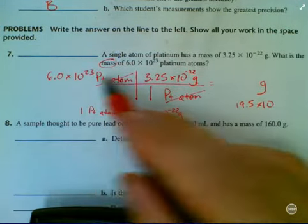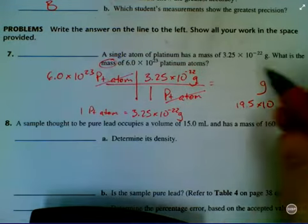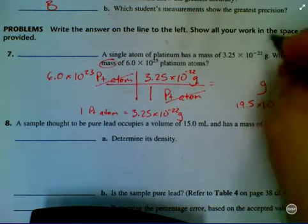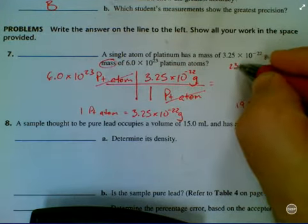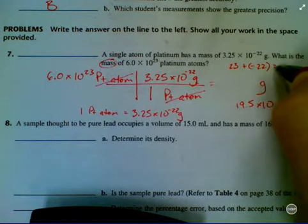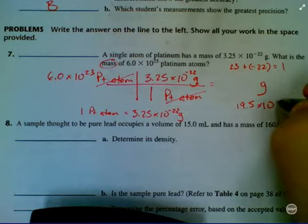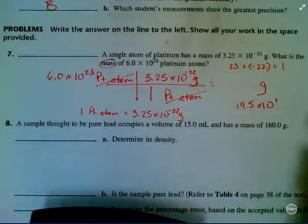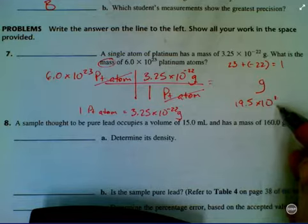So 19.5 is what the calculator told me. But I also have some scientific notation issues to deal with. I'm multiplying these two numbers that have exponents in them. So my rule is I'm going to add these exponents together. So I have exponent of 23 plus negative 22. That equals 1. So I bring that down here. So 19.5 times 10 to the first.